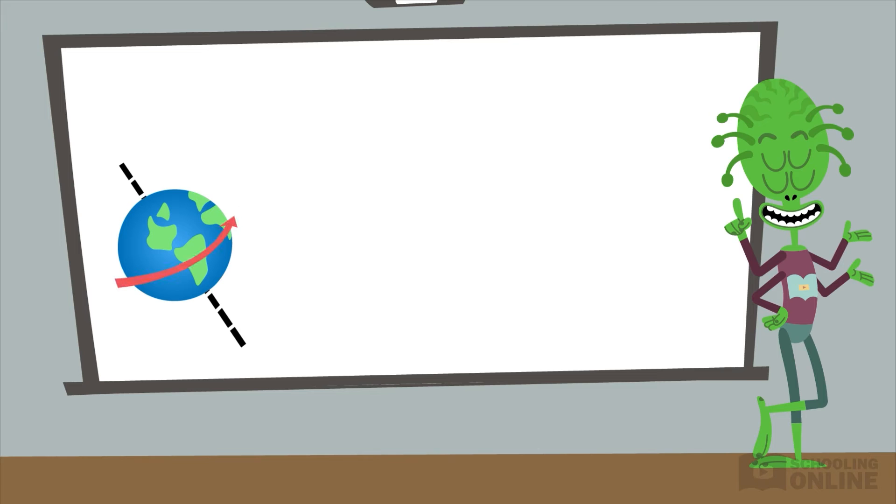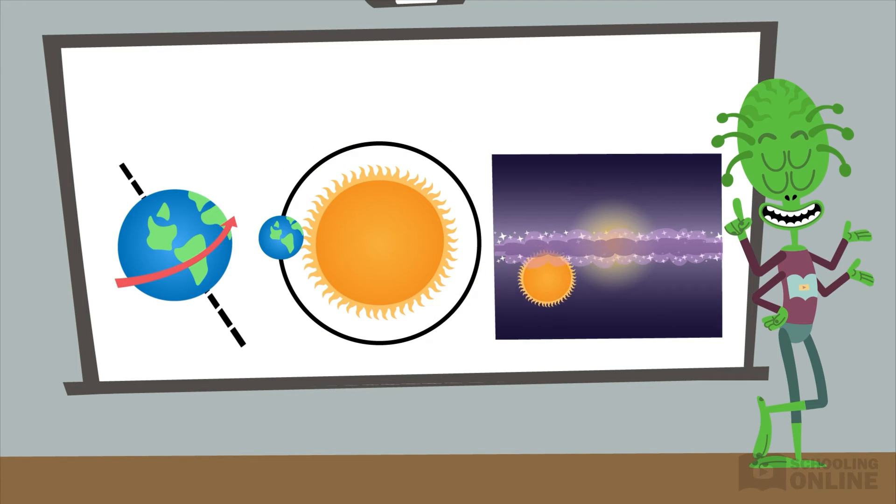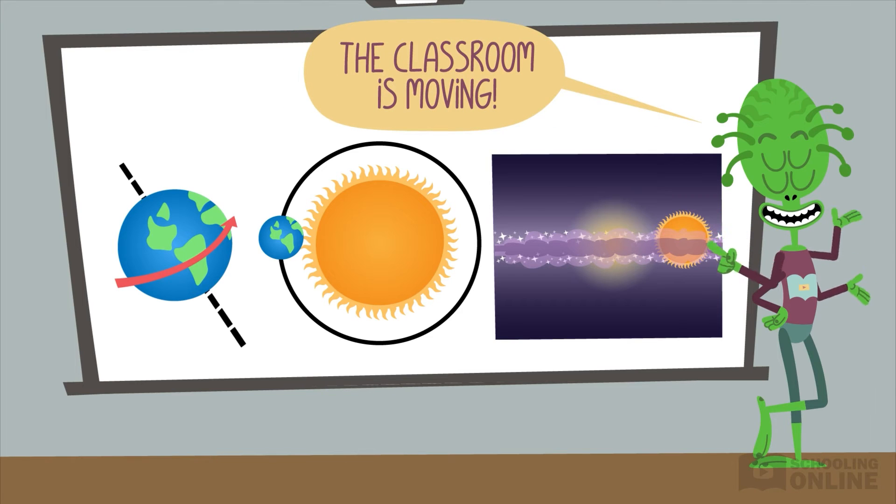The Earth rotates about its axis, the Earth orbits the Sun, and the solar system travels through our galaxy. Therefore, an outside observer would claim that your classroom is moving.